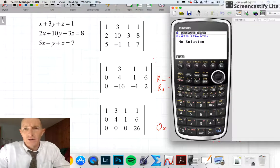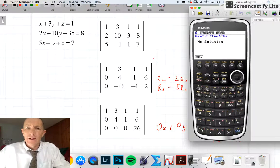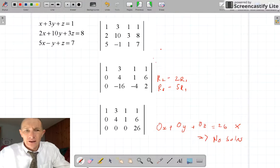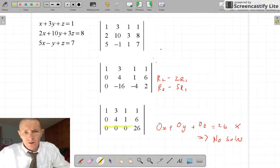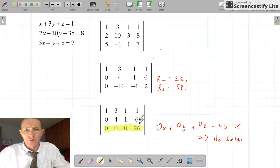and the calculator says no solutions. So the important thing here is basically when I end up with this line as 0, 0, 0, but a number in here, then it indicates that I have no solutions to my set of equations.